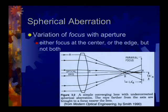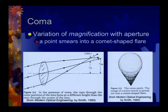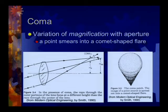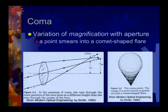Coma is a bit more difficult to imagine. As you move across the aperture, the magnification changes — perhaps one-to-one at center and two-to-one at the edge. A round area scales anisotropically, more in one direction than another, turning a point into a tear or comet shape. Lens manufacturers try to accommodate this because it's one of the most disturbing kinds of distortion.